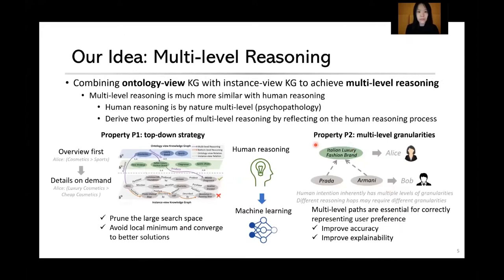Compared with bottom-level reasoning, multi-level reasoning is much more similar to human reasoning. Human reasoning is by nature multi-level, according to psychology. By reflecting on the human reasoning process, we can derive two desirable properties of multi-level reasoning.